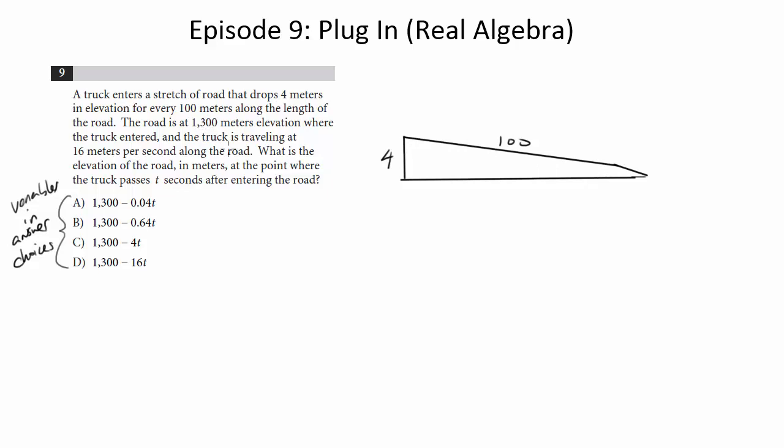The road is at 1300 meters elevation where the truck entered and the truck is traveling at 16 meters per second along the road. So the actual picture we're going to be looking at here is we're at 1300 meters in elevation and again we're going to be in a decline and our little truck is traveling this way at 16 meters per second.